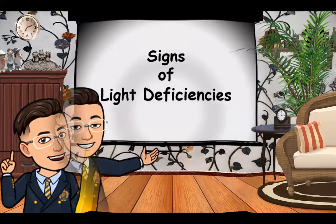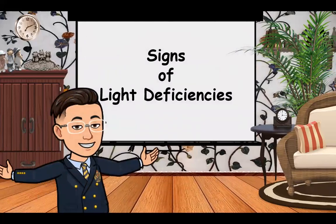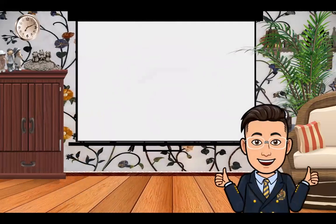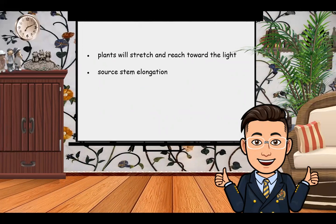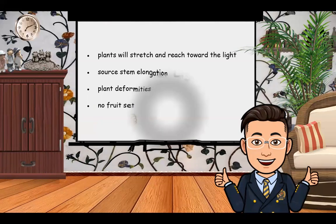There are also different signs of light deficiency. The first is that plants will stretch and reach toward the light source if there is not enough light. The second is stem elongation, which can also occur with insufficient light, as well as plant deformities and no fruit set. To address all of these deficiencies, we can provide what we call artificial lighting.